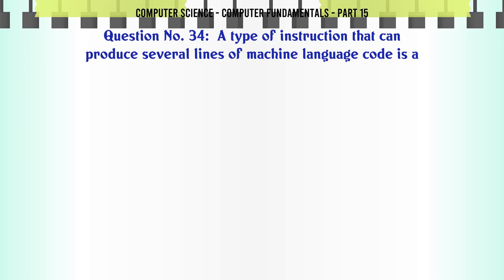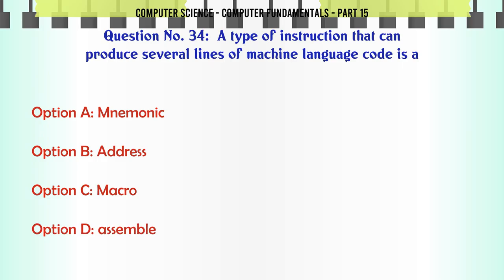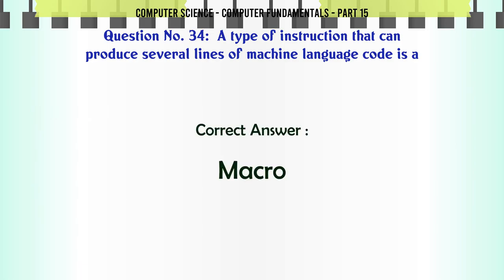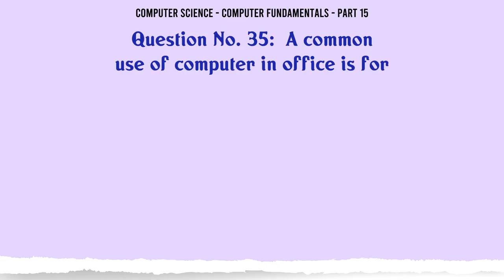A type of instruction that can produce several lines of machine language code is: A. Mnemonic B. Address C. Macro D. Assembler. The correct answer is Macro.